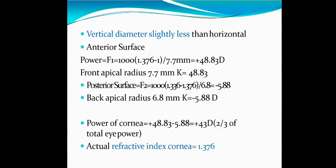Anterior surface power: Power F1 = 1000(1.376 - 1) / 7.7 mm = +48.83 D. That is the front power with front apical radius of 7.7 mm.